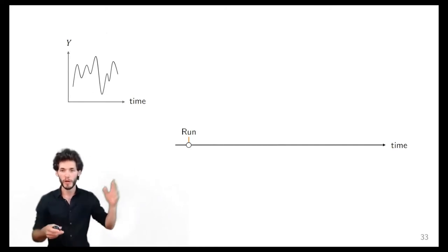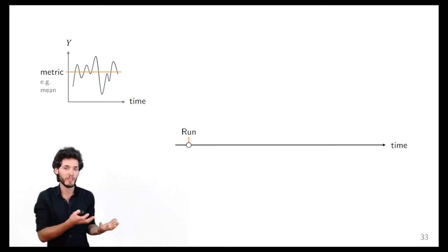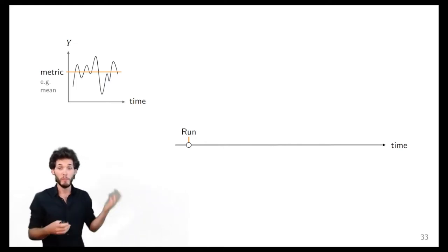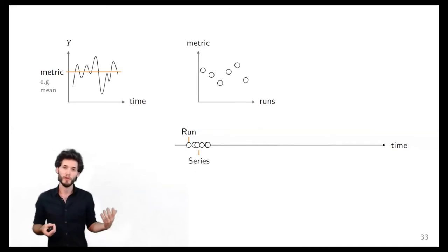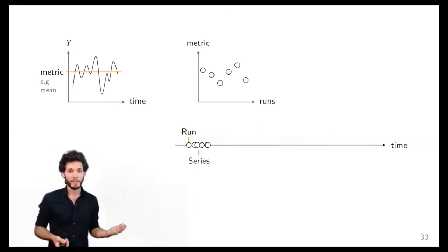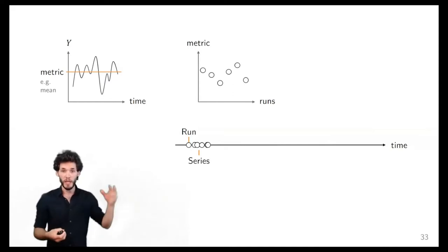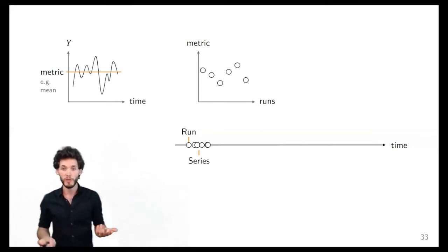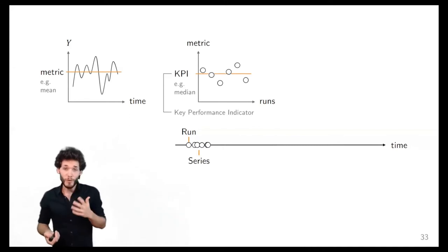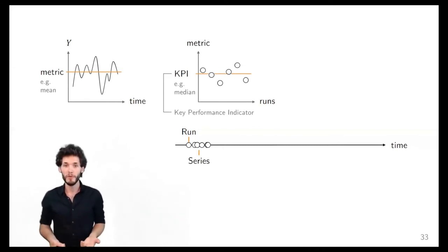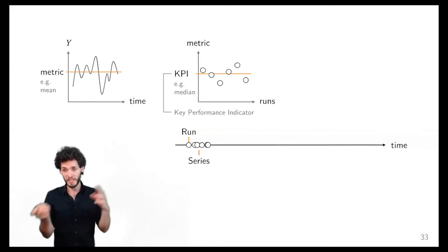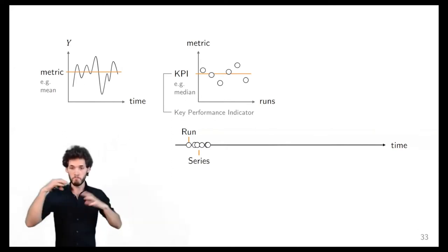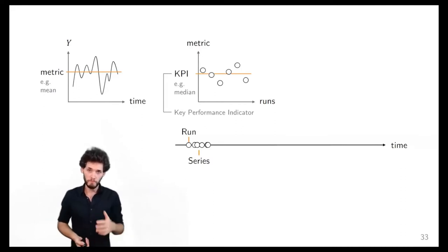Let's say you measure your system — your Banana algorithm — where Y is energy consumption. You measure over time: that's one run. You then do a first aggregation step, for example taking the mean of your measurement over time — that is called a metric. If you do multiple runs, due to sources of variability the metric value will be slightly different each time — a bit higher, a bit lower. What people most often do in papers is again aggregate these, for example taking the median or mean and standard deviation, giving some kind of number to report. Let's generically call that a Key Performance Indicator (KPI).